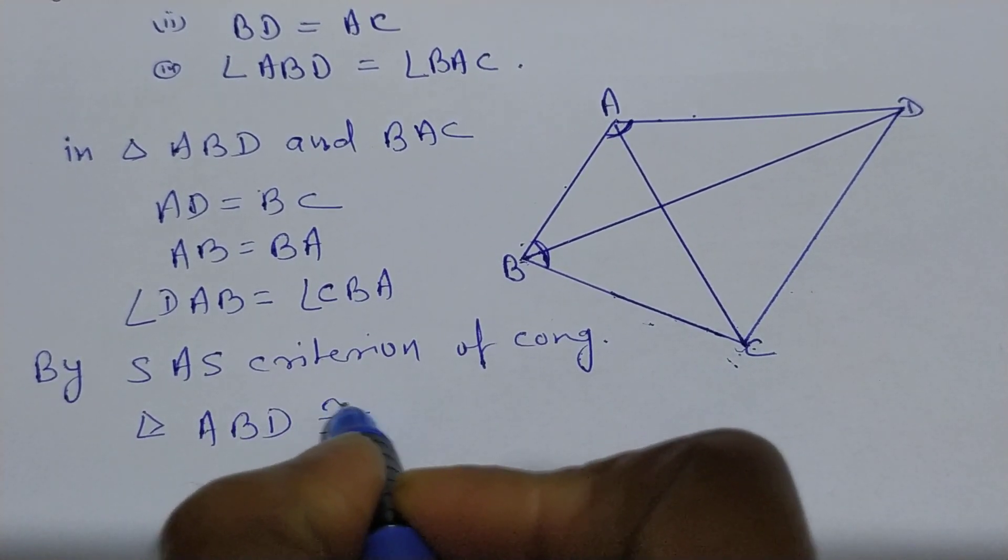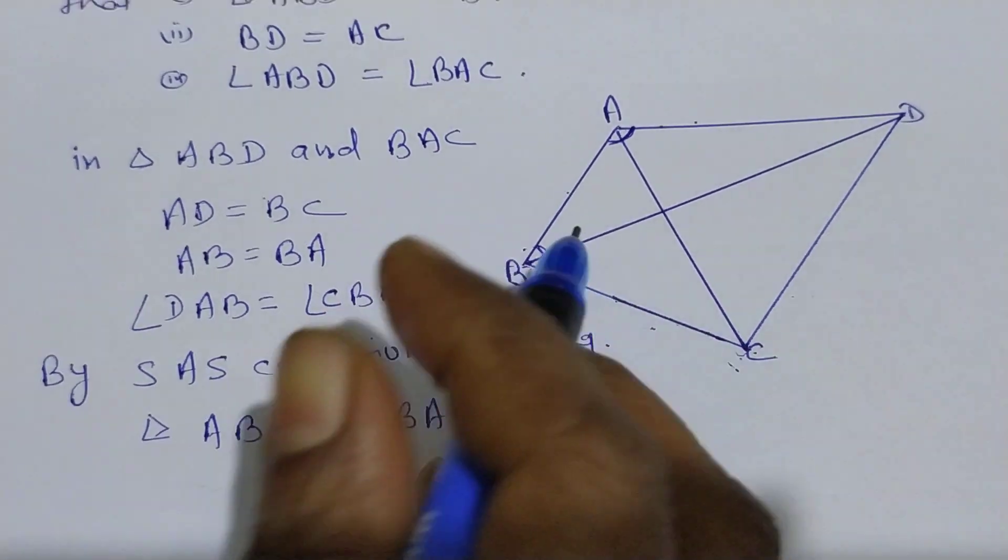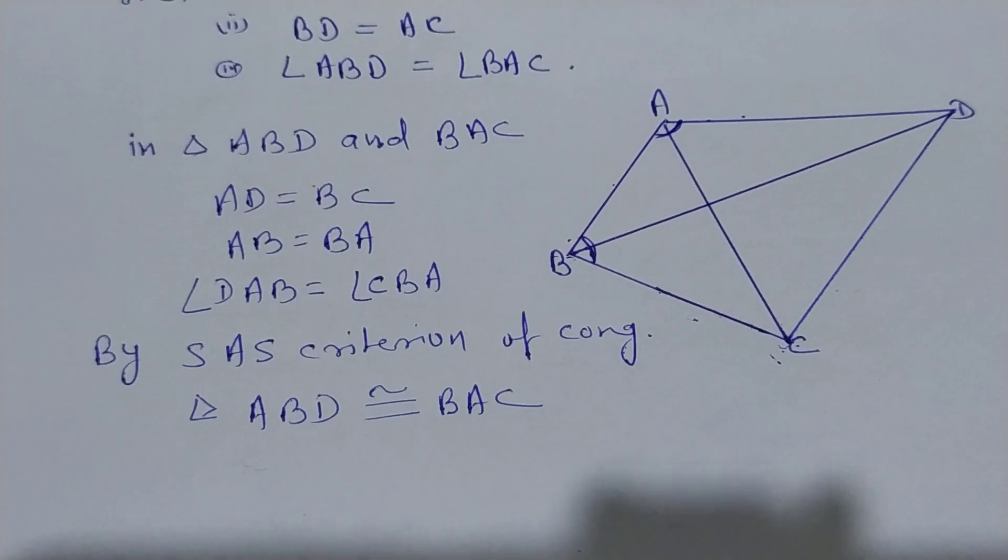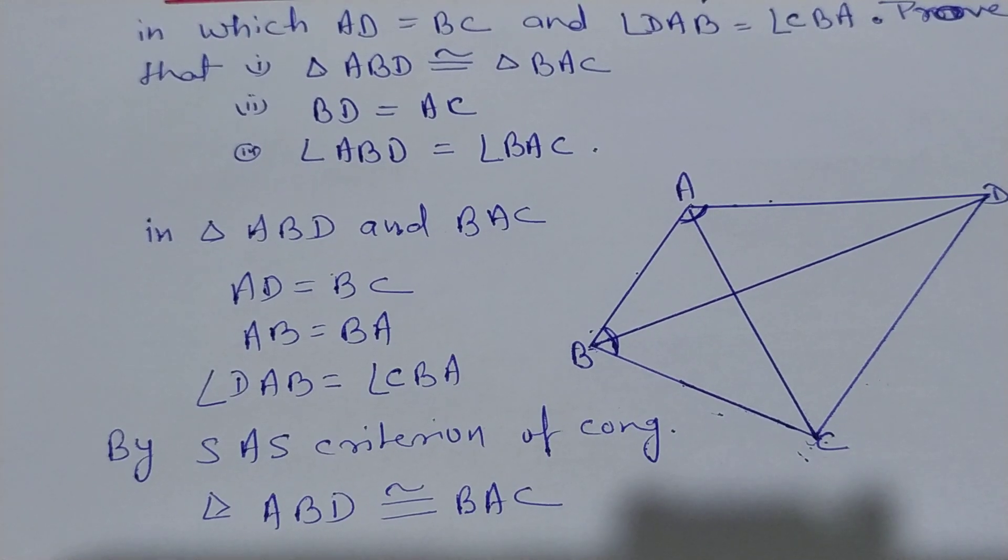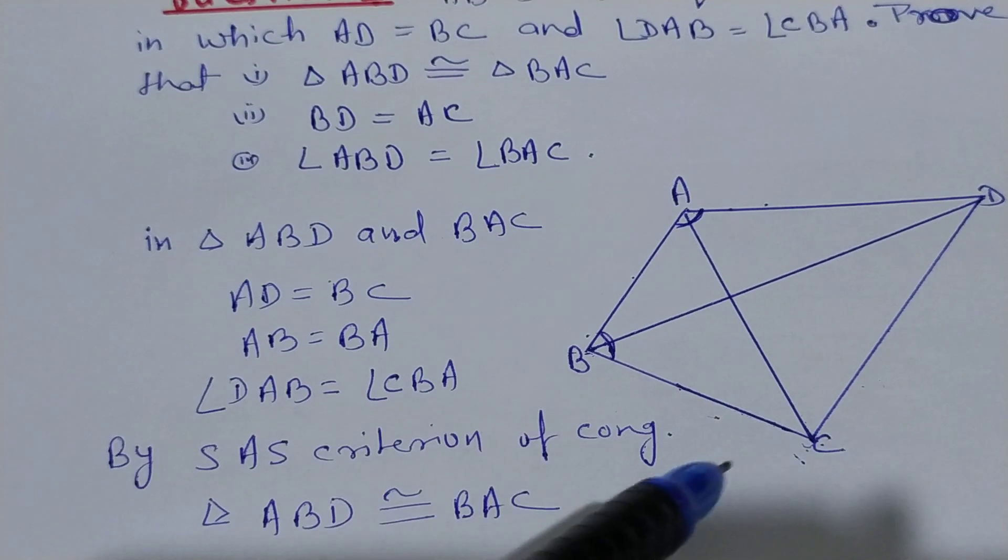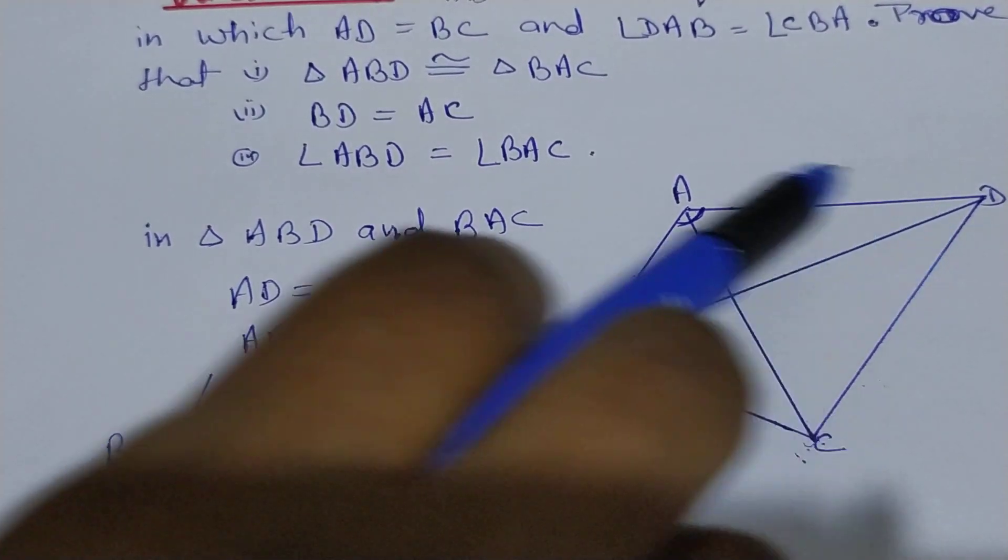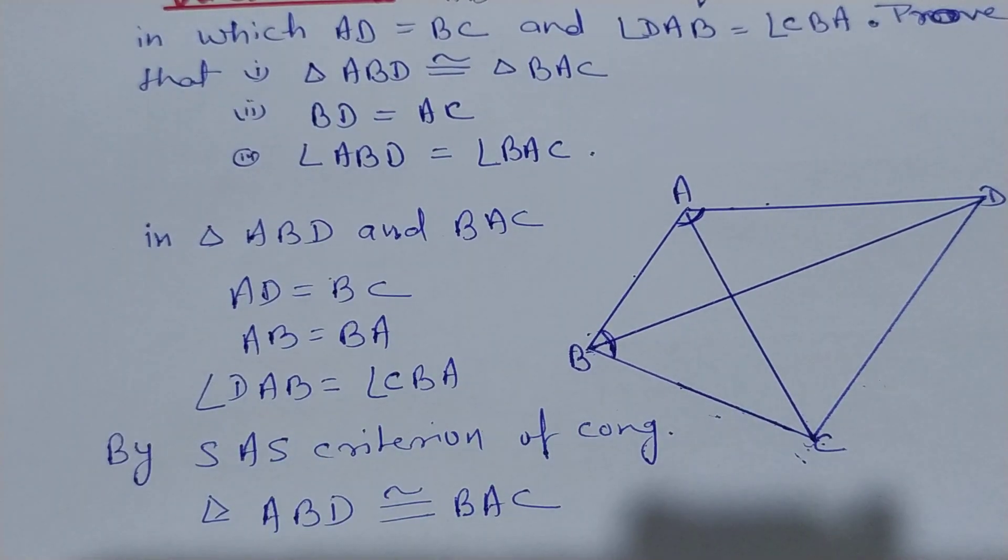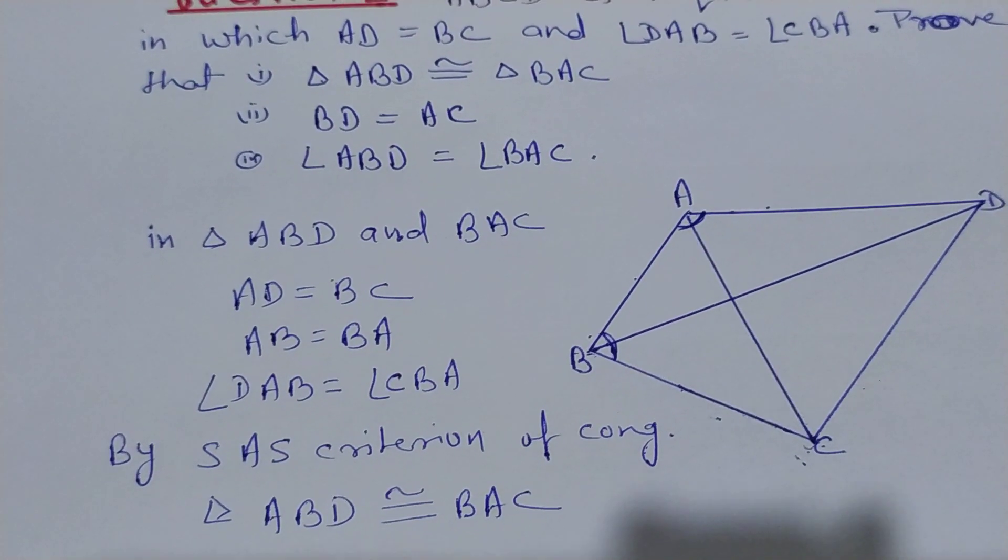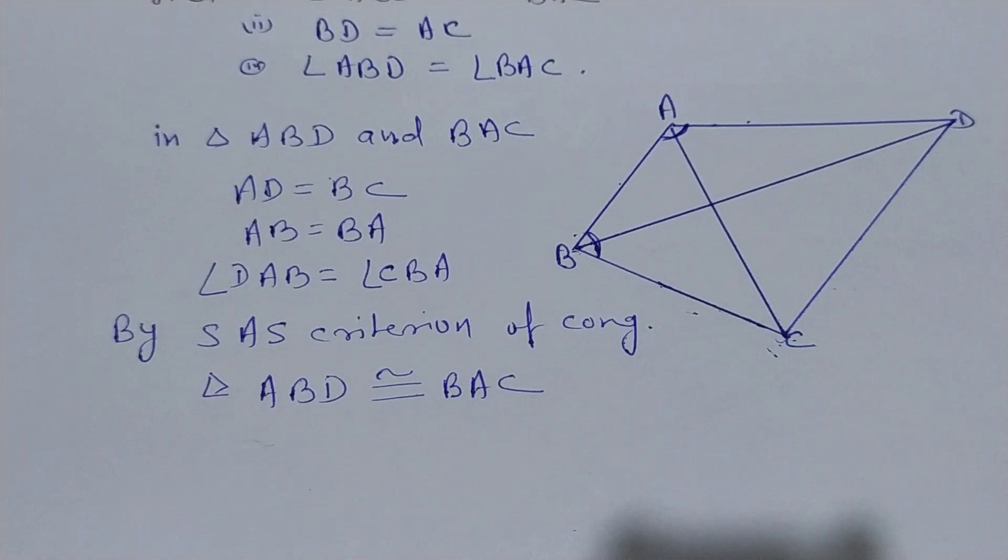The second thing we have to prove is BD equal to AC. Now since these two triangles are proved congruent, BD equal to AC will become automatic because corresponding parts are equal in congruent triangles.